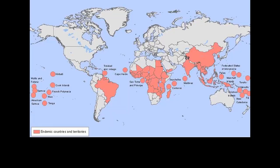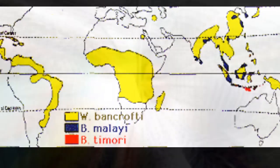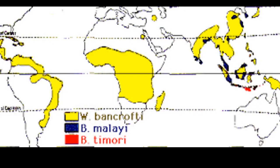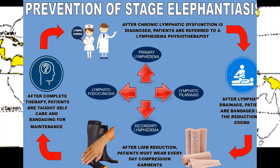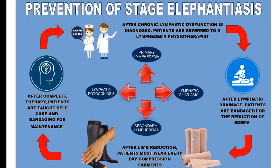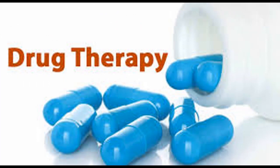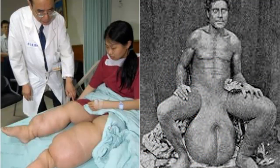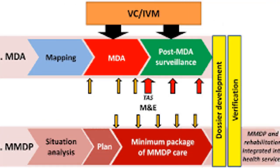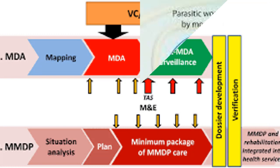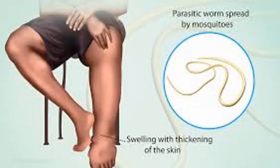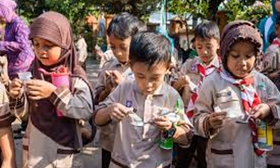Some countries — Togo, Egypt, Cambodia, Sri Lanka, Thailand, the Cook Islands, the Marshall Islands, Maldives, Niue, Tonga, and Vanuatu — appear to have eliminated transmission entirely (WHO, 2019). Despite a substantial decrease in cases of lymphatic filariasis worldwide between 2000 and 2018, from an estimated 199 million to approximately 50 million, infection rates remain high in endemic areas that have not yet implemented MDA. Furthermore, delays in MDA in the context of the COVID-19 pandemic are likely to further compromise elimination efforts.